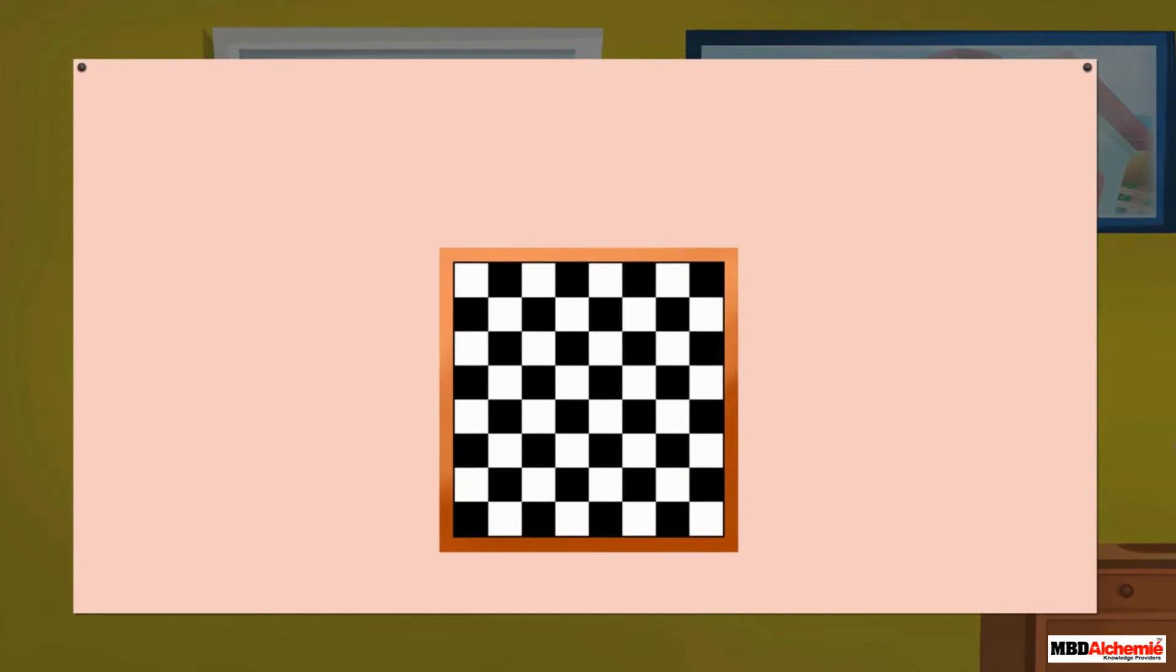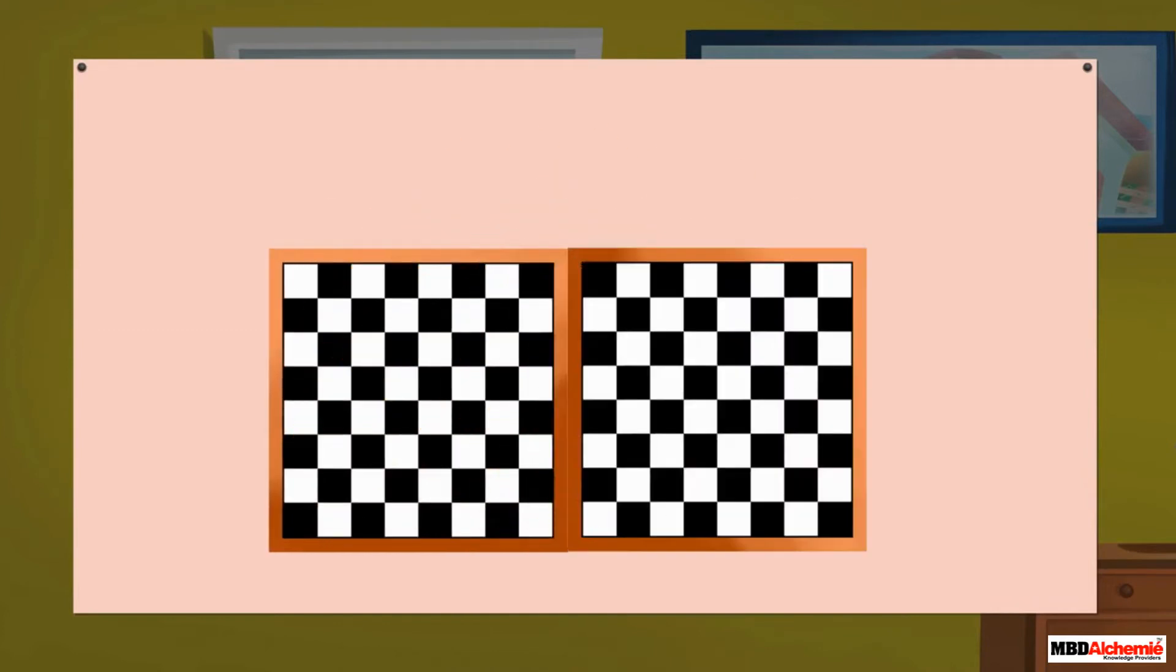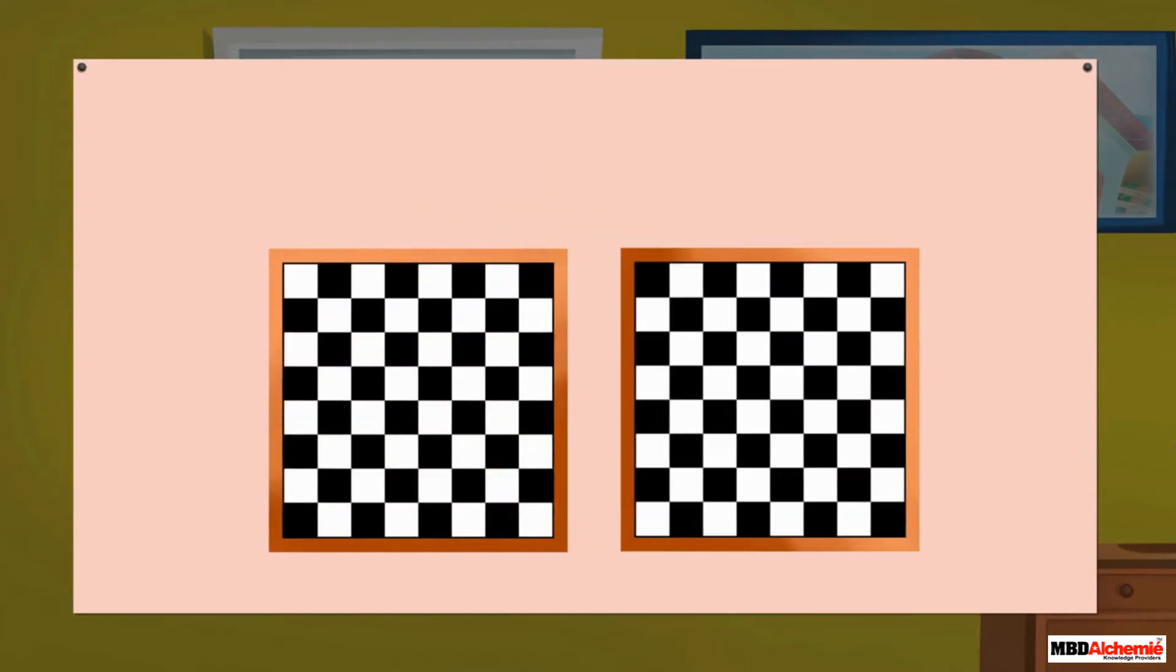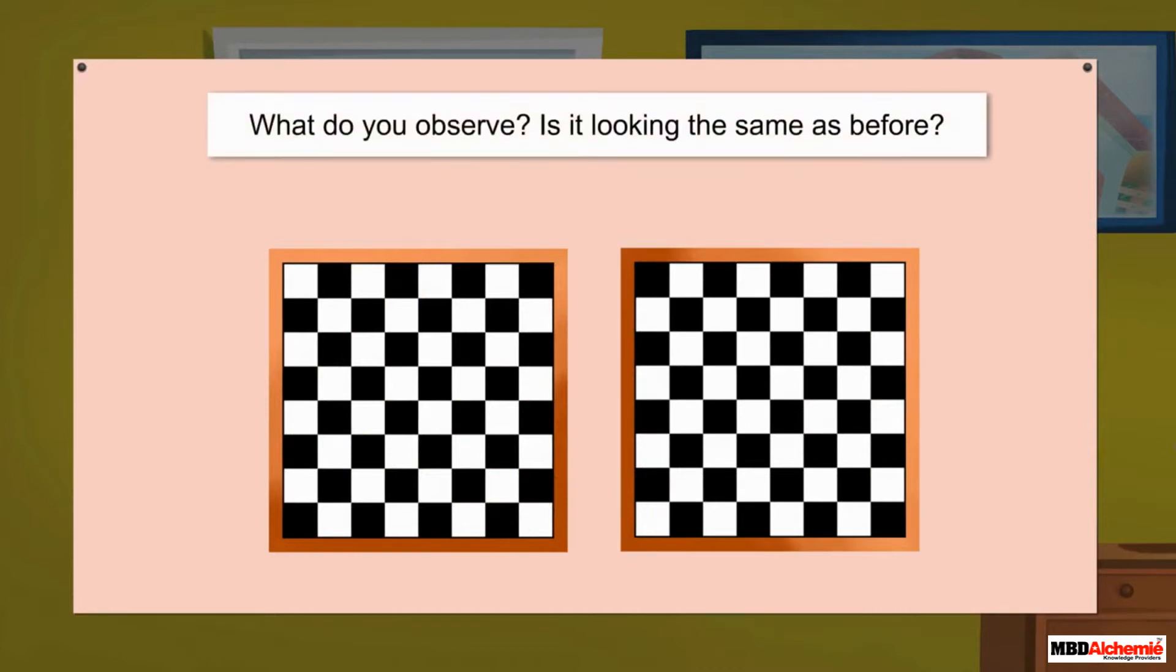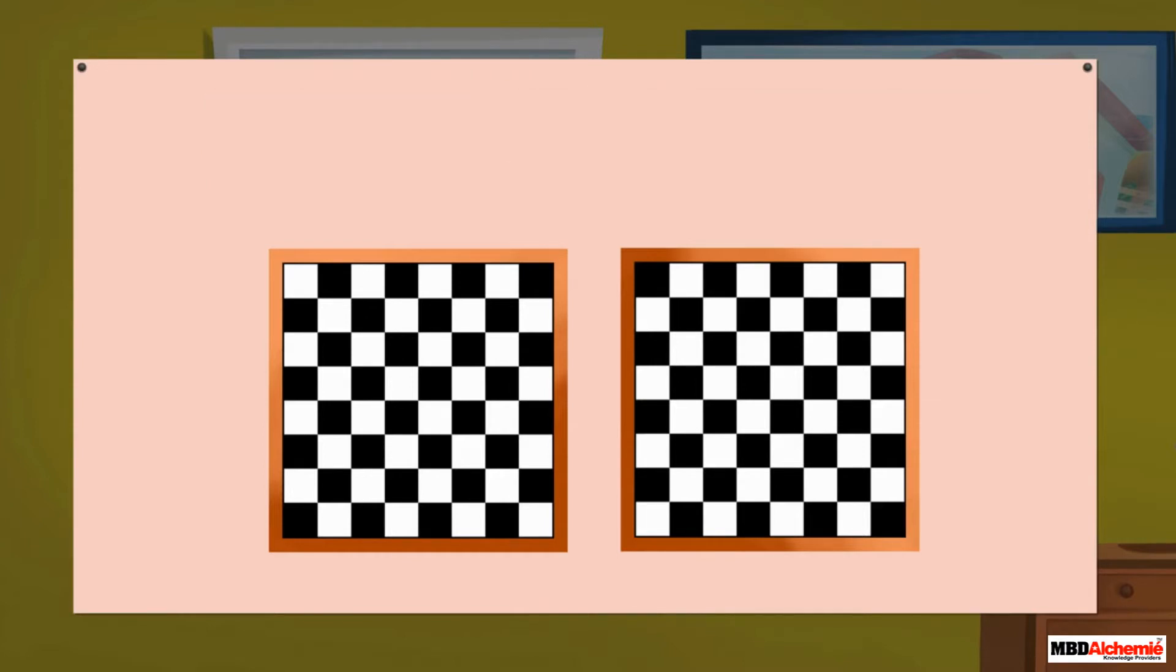Look at the chess board. Let us make a one-fourth turn. Then it will look like this. What do you observe? Is it looking the same as before? No. Note that in the first board, the black square is on the left corner and the white is on the right corner. In second board, the white is on the left and the black on the right. So they are not the same.